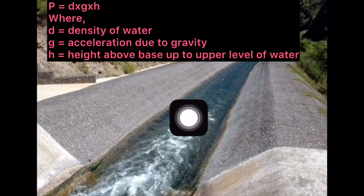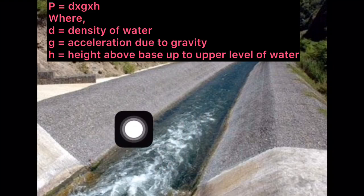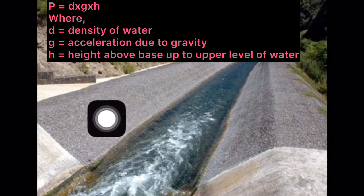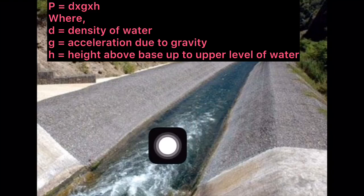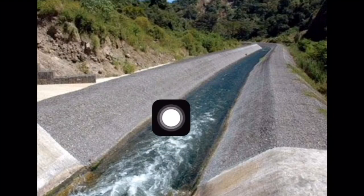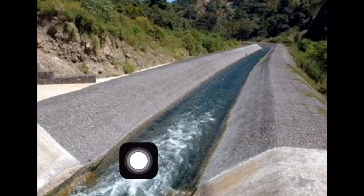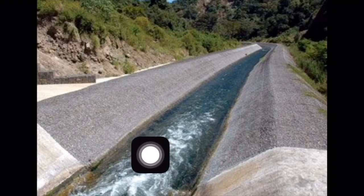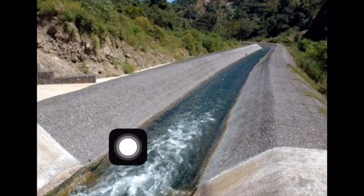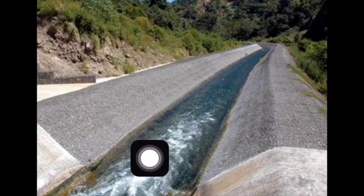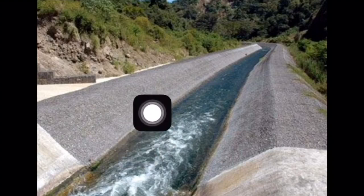The surface of the dam is the base where pressure increases. P is equal to dgh — where d is the density of water, g is the acceleration due to gravity, and h is the height from the base. The pressure P equals force applied by the water on the base of the dam.